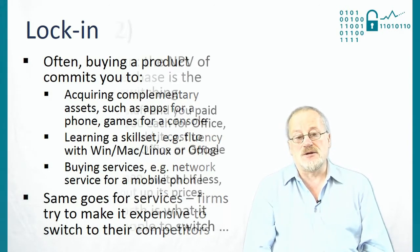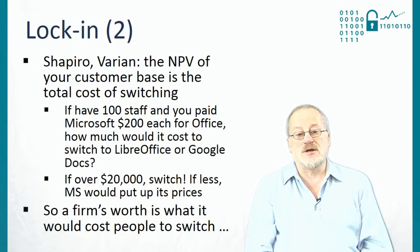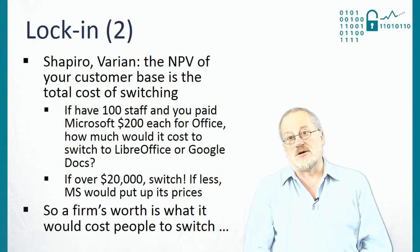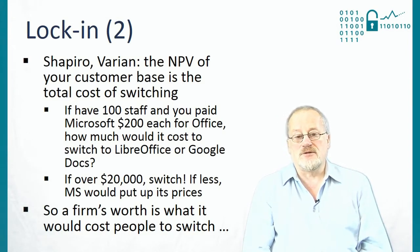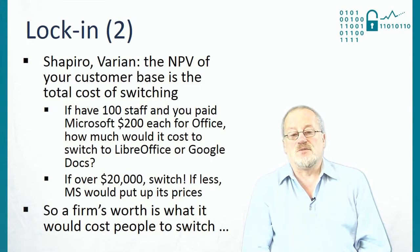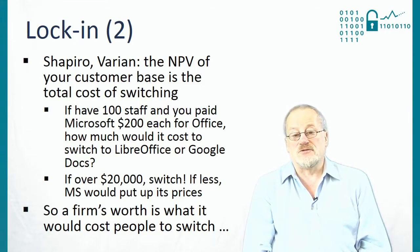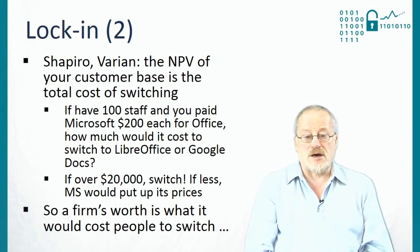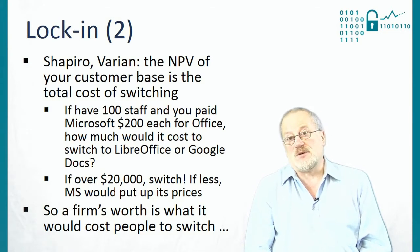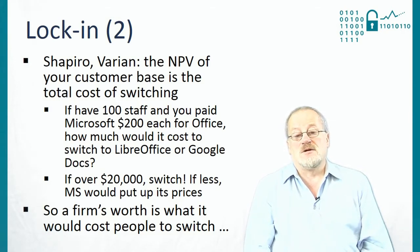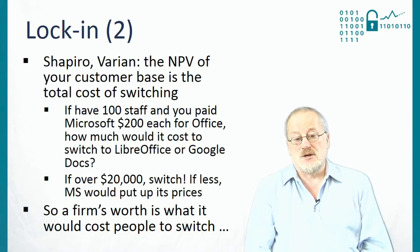There's a really interesting result here by Carl Shapiro and Hal Varian from the late 1990s, which is that the net present value of your customer base is just the total cost of switching. To see this, suppose that you're a law firm with 100 staff, and you've paid Microsoft $200 so that each staff member can have a copy of Office and Windows. How much would it cost your company to switch to LibreOffice or Google Docs? The answer, if you're a typical firm at the margin, is $20,000 — because if it would cost more than this, then you'd switch, and if it would cost less, then Microsoft would put up its prices. So a firm's net worth is the total switching cost of all its customers.